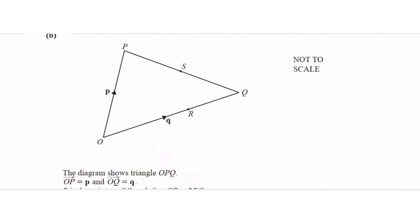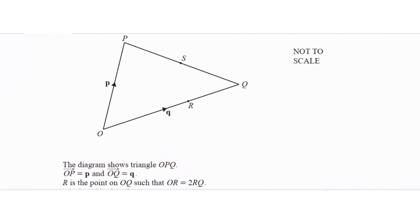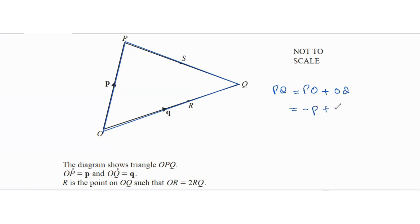Find PQ. If we start from P, go to O, then from O go to Q, that equals PQ. So PQ = PO + OQ. PO is the opposite of p, which is -p, and OQ is q. So PQ = -p + q.